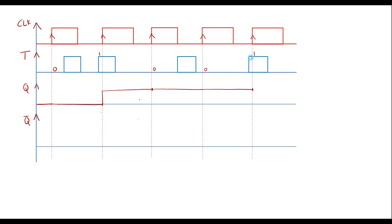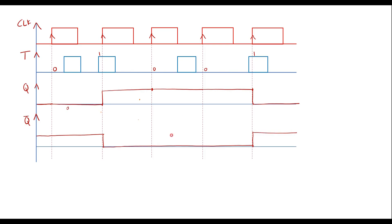At the next instant, T value is 1 — again the flip-flop will toggle and go low. This is the Q waveform. Q bar will be the complement: where Q is 0, Q bar is 1; where Q is 1, Q bar goes to 0; then it goes high again. This is the complete waveform for the T flip-flop.